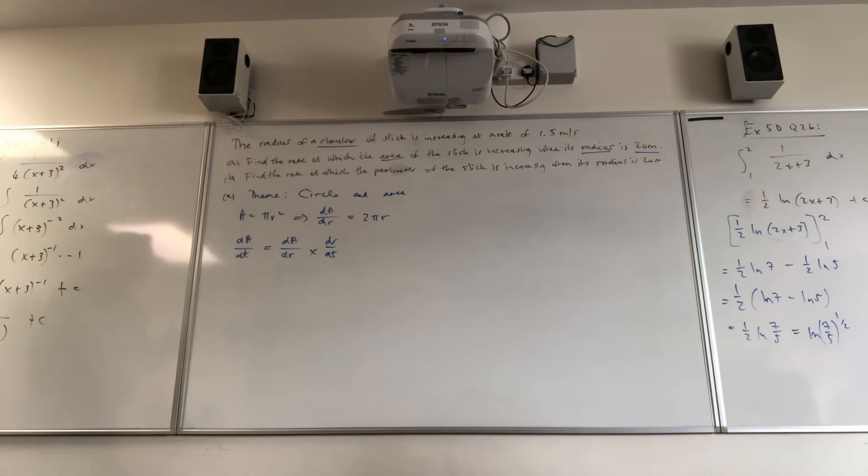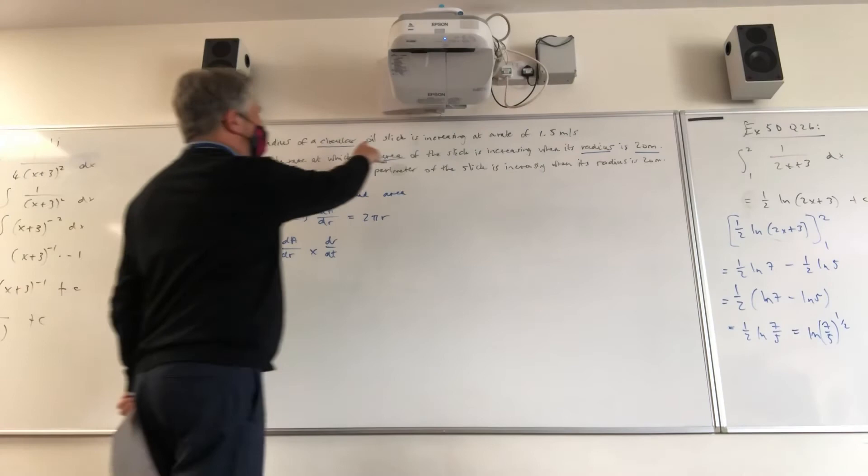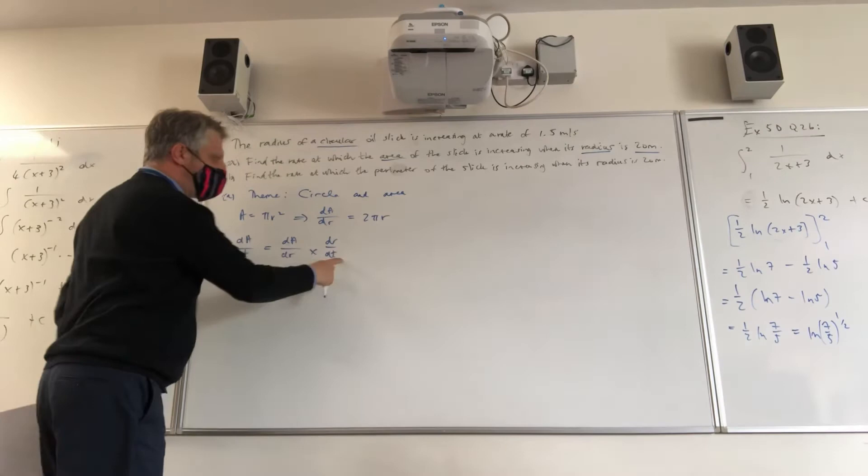And do I know the rate at which the radius is changing over time? Yes, 1.5. Yes. The radius of the circle is increasing at a rate of 1.5 meters per second. So the rate over whatever period of time we're dealing with.